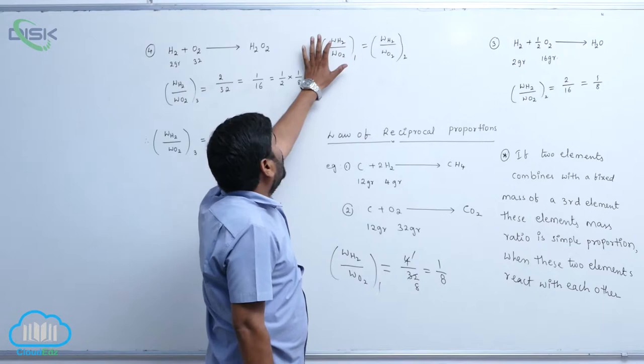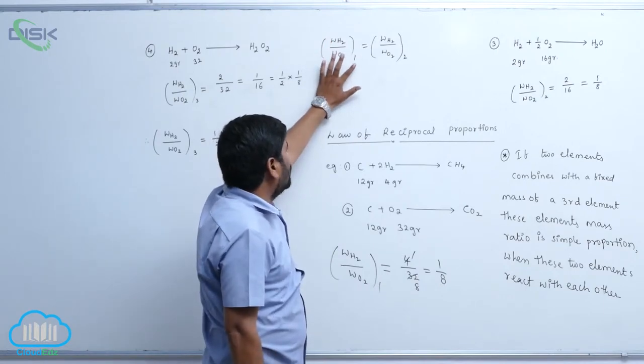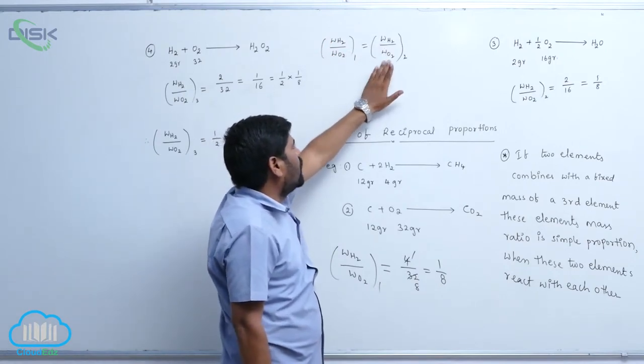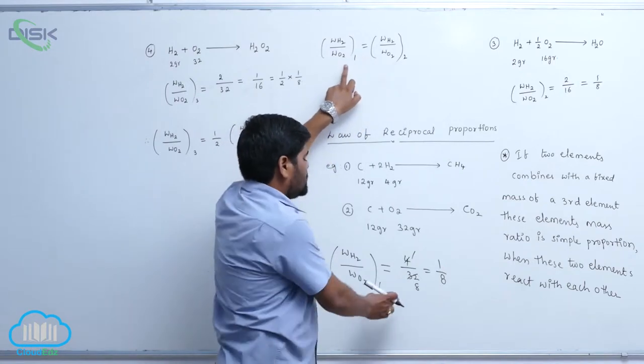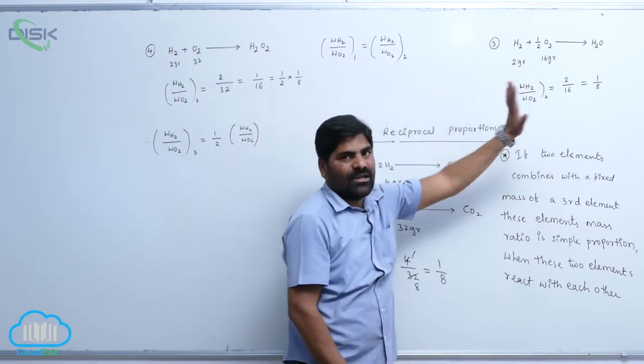Therefore, WH2 by WO2 equals to WH2 by WO2. This is the first process, and this is the second process.